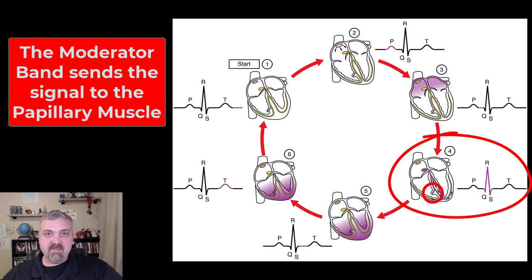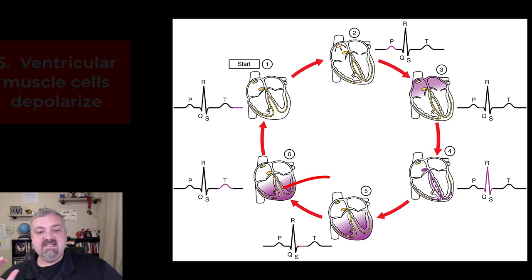The other area that's being stimulated there, I'll circle it here for you, is called the moderator band. The moderator band is a little string of tissue that's going to actually connect to the papillary muscles. Hopefully you remember them. The papillary muscles are the nipple-like muscles inside the heart. They're going to tense up right before the rest of the ventricle contracts to make sure that the AV valves are good and stiff. So that's called the moderator band. That's step four.